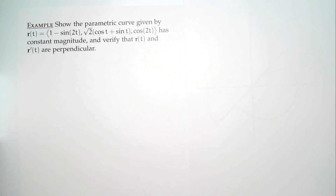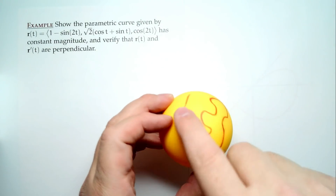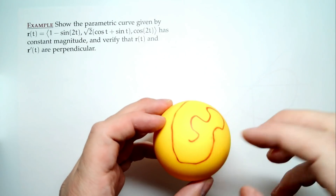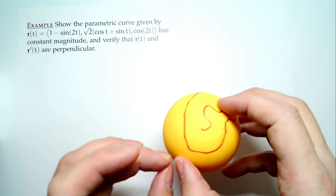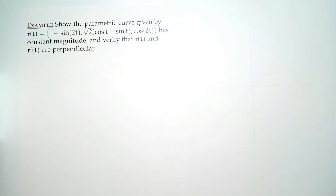If you have something with constant magnitude, so you have a curve traveling through space but the magnitude is fixed, one way that can happen is if you live on a sphere. Even though you traverse the sphere and move around, if the center is the center of the sphere, the magnitude stays the same because you're traveling on the surface. So if your magnitude is fixed, it must be the case that your position and velocity are perpendicular.